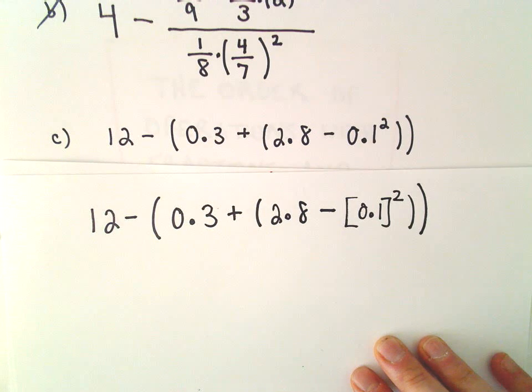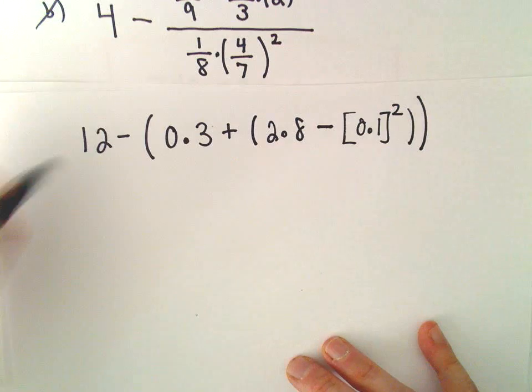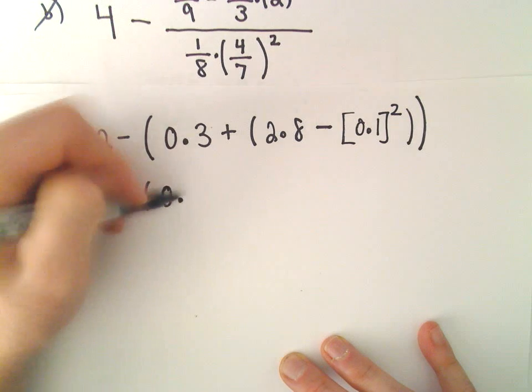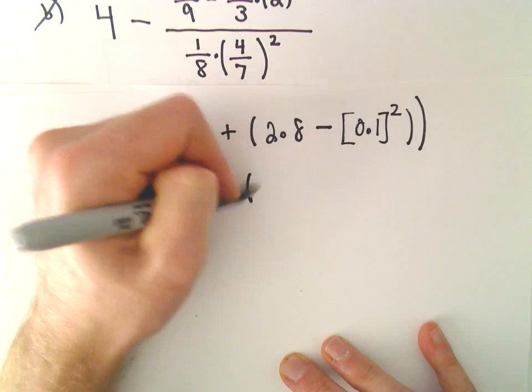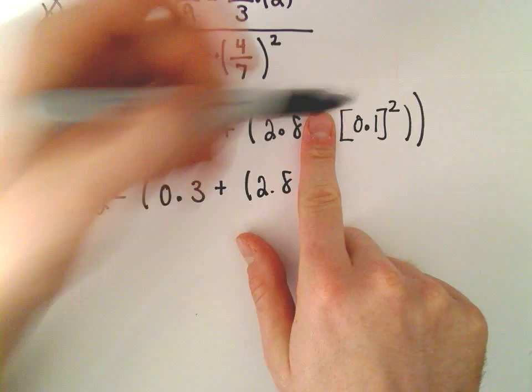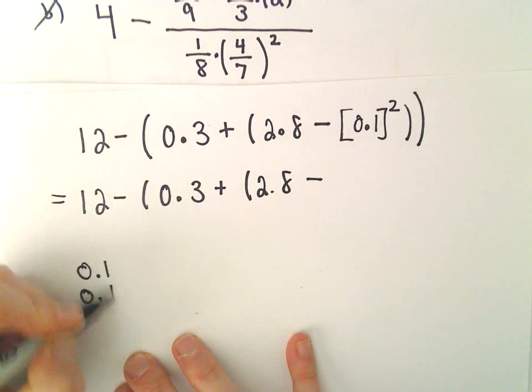So what we're going to do here now, the first thing I'm going to do are my exponents. So we have 0.3 plus 2.8 minus, again, because we're just really squaring 0.1. So what is 0.1 times 0.1?